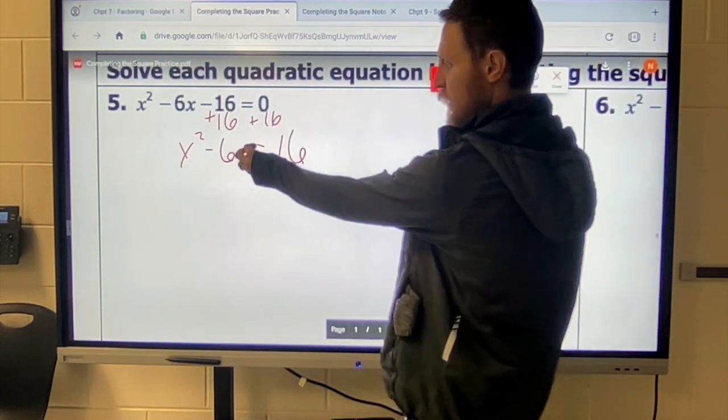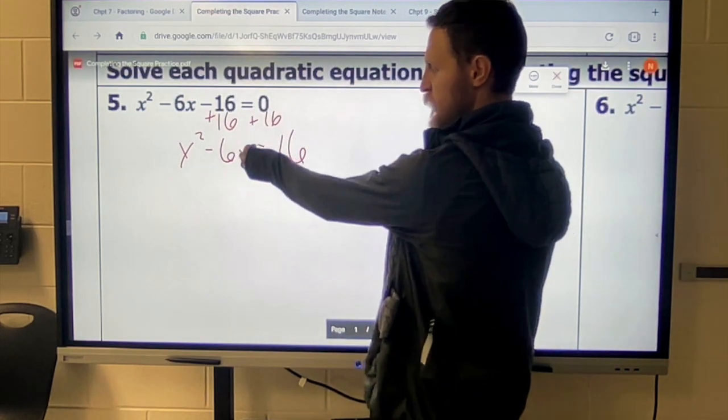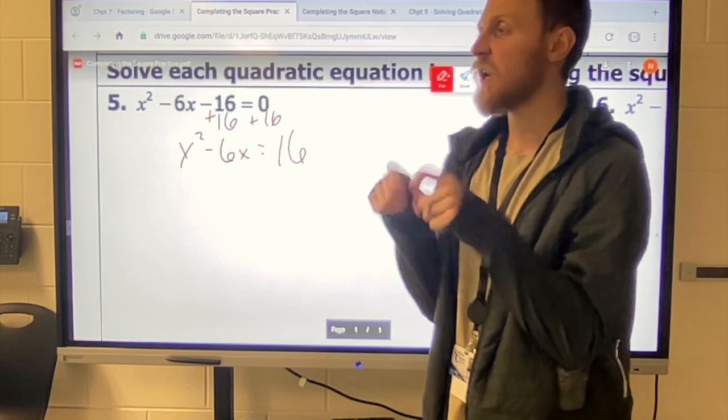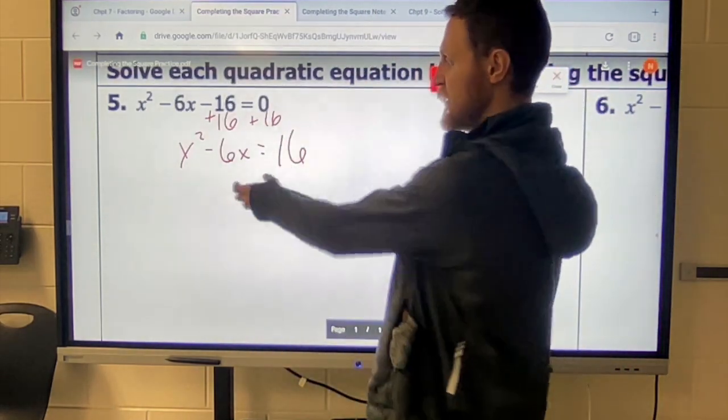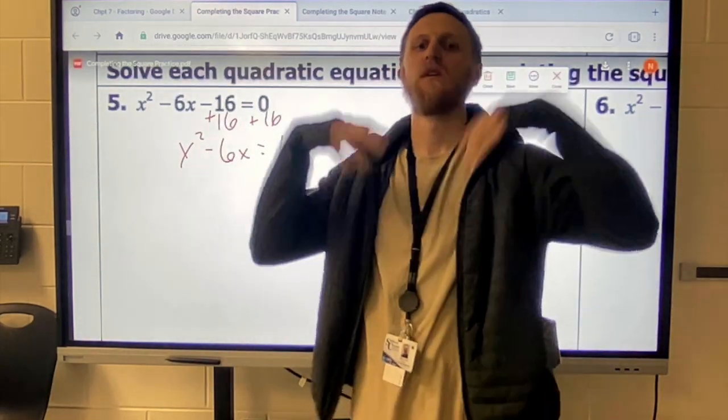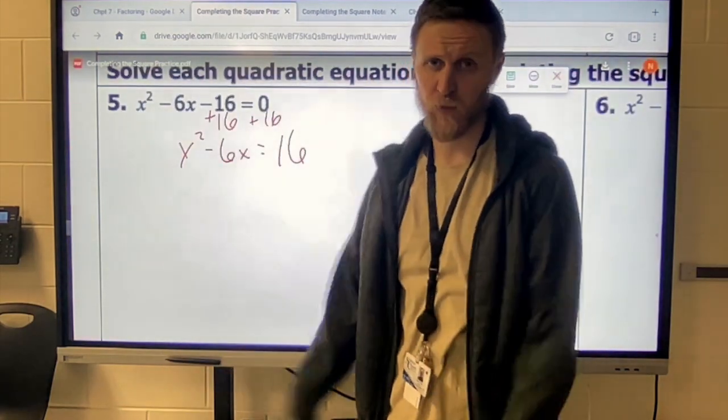Now I've got to figure out what's that perfect square number. Like what can I put in for the new c value that's going to let me have the exact same numbers. And the way that we talked about doing that yesterday is you take whatever your b value is, which in this case is a negative 6, divided by 2, square it. That's how we do it.